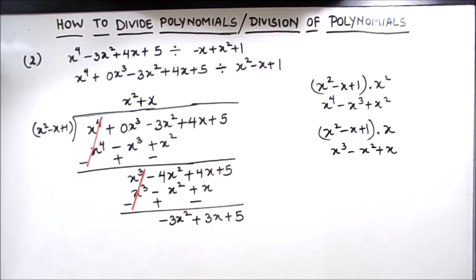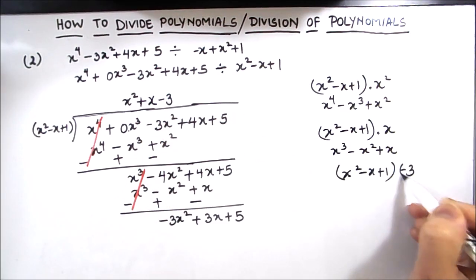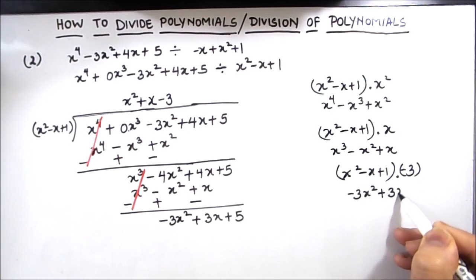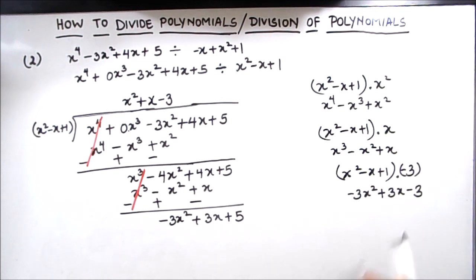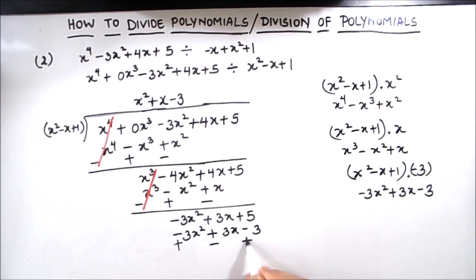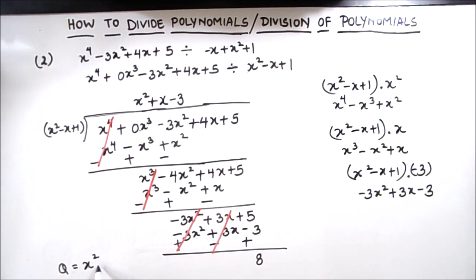To get minus 3x squared, we multiply the divisor by minus 3. So minus 3 times x squared minus x plus 1 gives minus 3x squared plus 3x minus 3. Changing signs for subtraction: minus 3x squared cancels, 3x minus 3x cancels, and we are left with 5 plus 3 which equals 8. The quotient for this division is x squared plus x minus 3 and the remainder is 8.